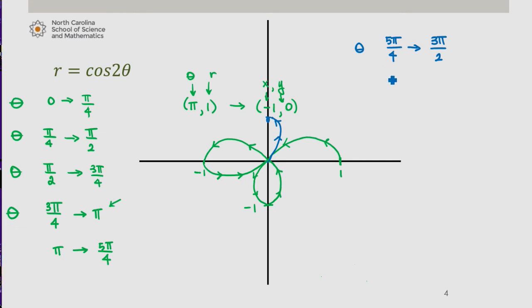When theta increases from 3 pi over 2 to 7 pi over 4, r ranges from negative 1. So 3 pi over 2, negative 1 gives me this coordinate to 0. So we come back.